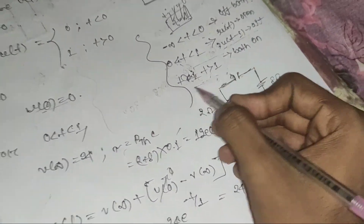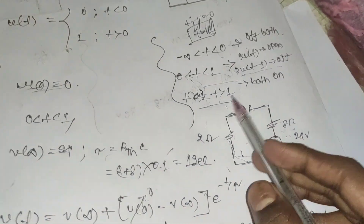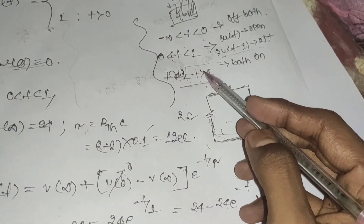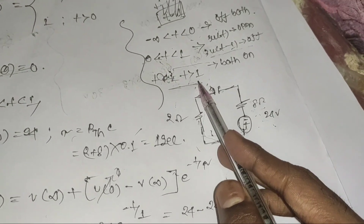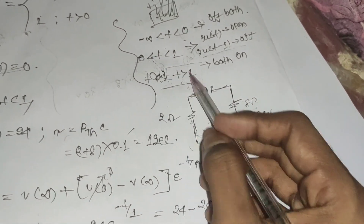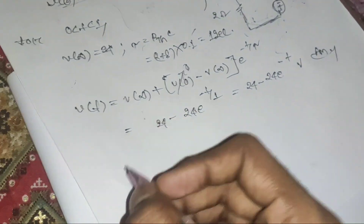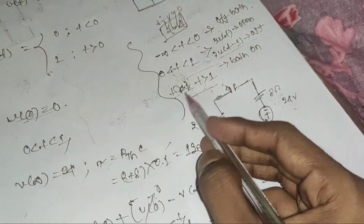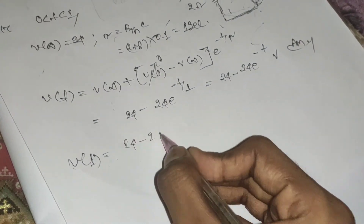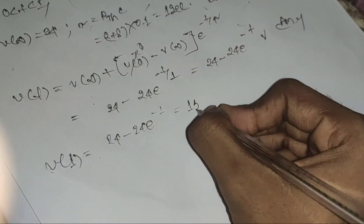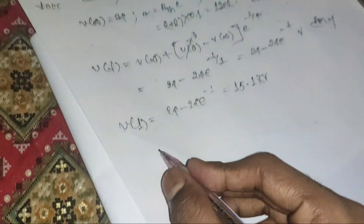For the range t > 1, we need the initial voltage v₁ = v(1), which comes from the previous equation: v₁ = 24 − 24·e^(−1) = 24 − 24×0.368 ≈ 15.17 volts. This value serves as v₀ for the next range.